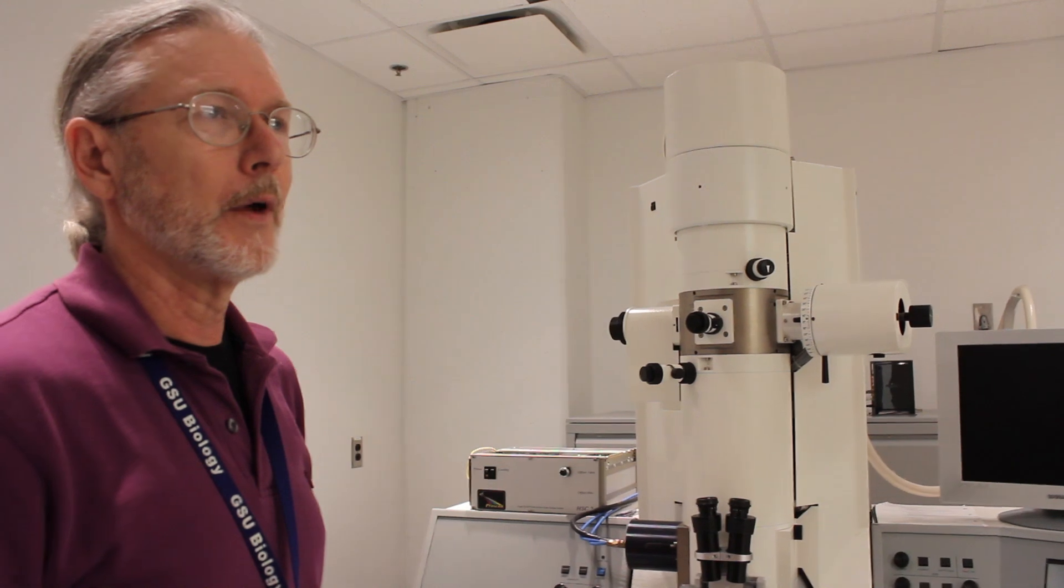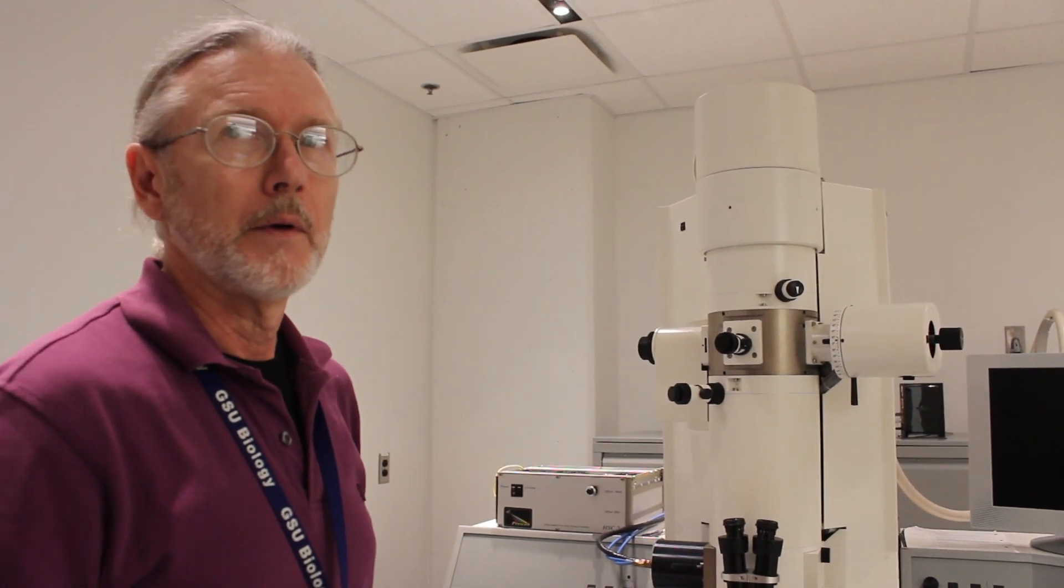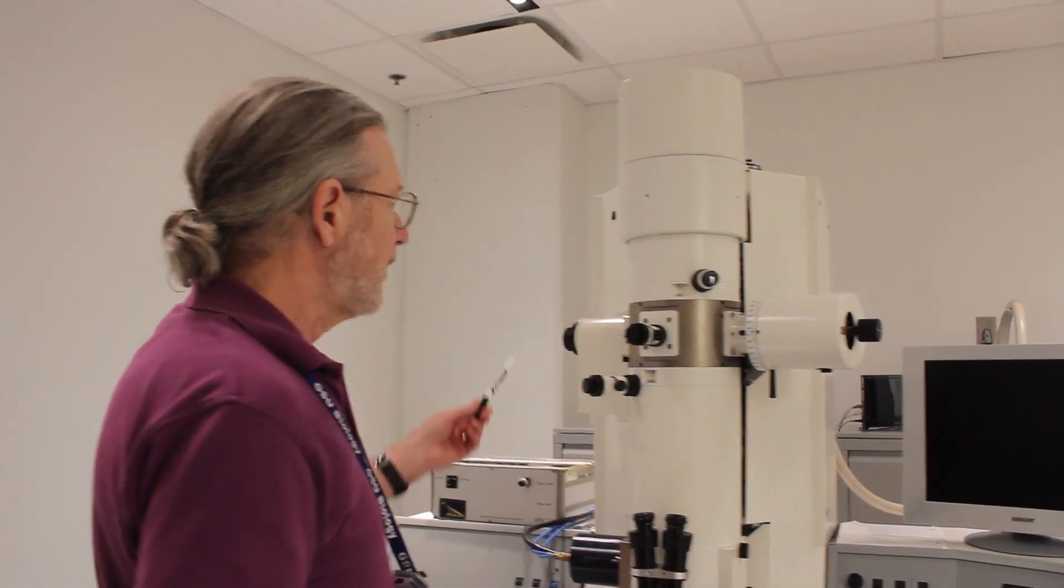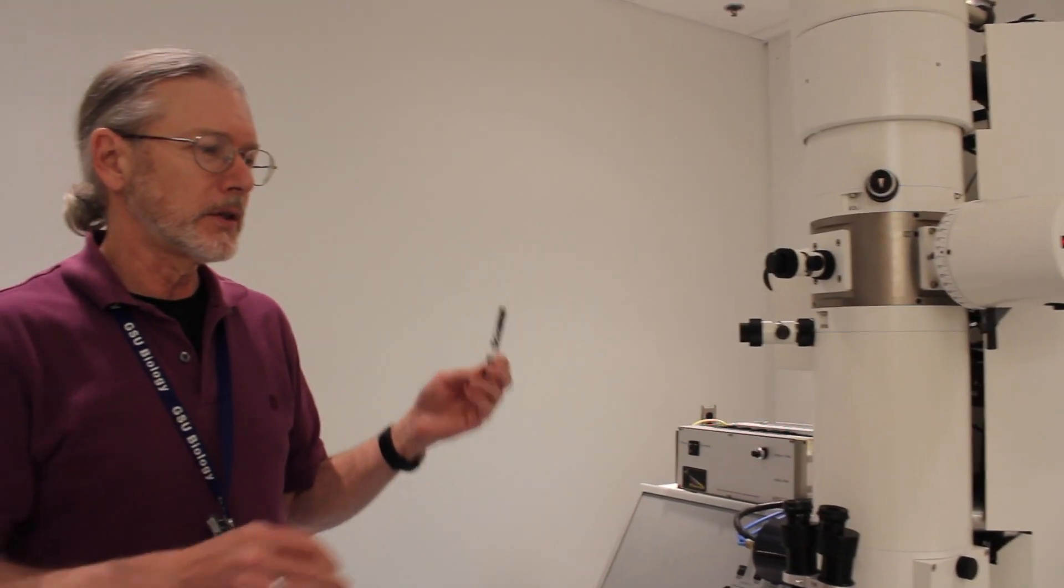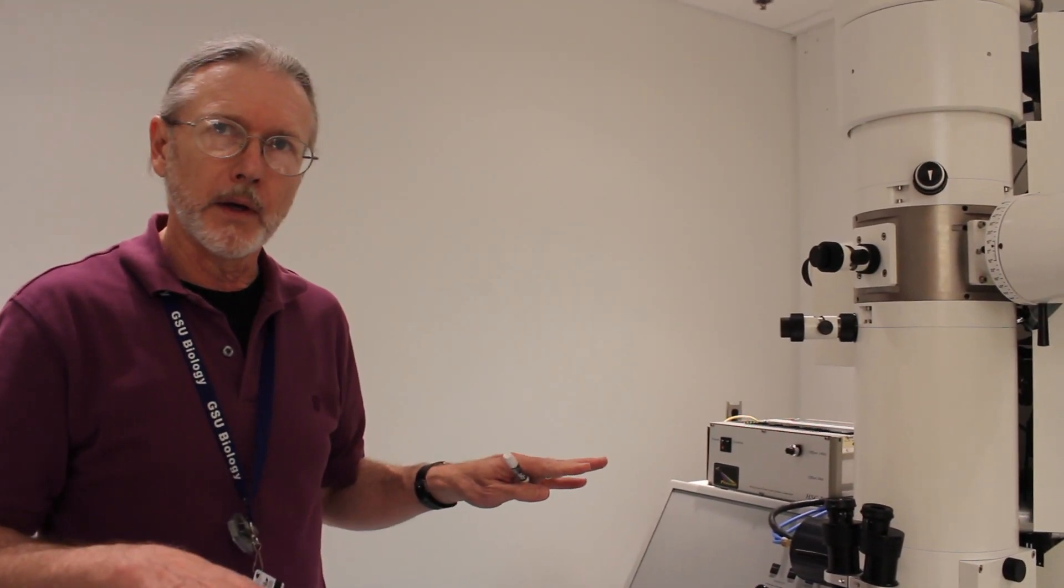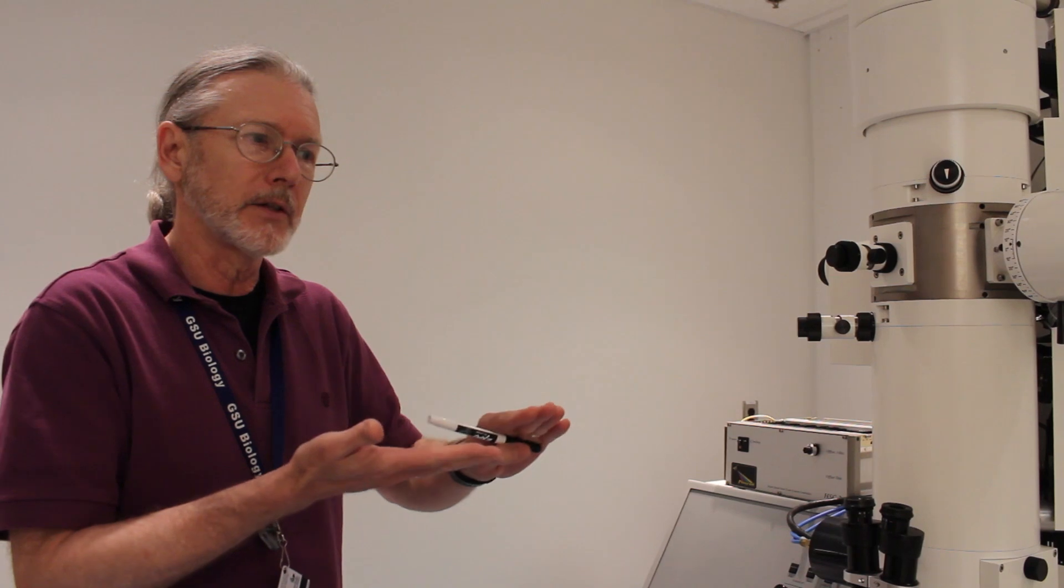For biological stuff we usually run around 10. So can you look at metals and stuff on this? Well, you can look at thin film metals with this, but the main thing that I use this microscope for is instead of looking at the surface of something, I'm actually going to be cutting thin slices and looking through it.